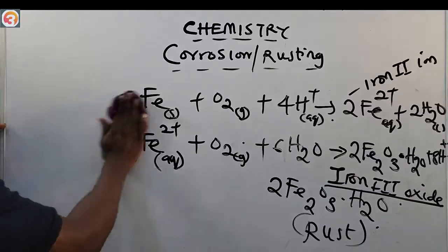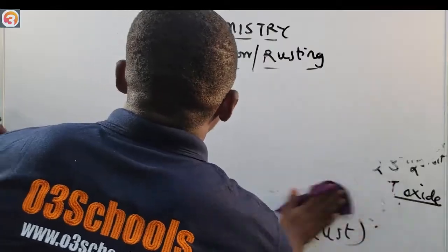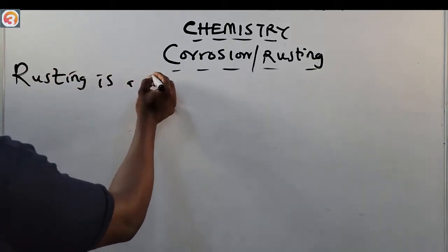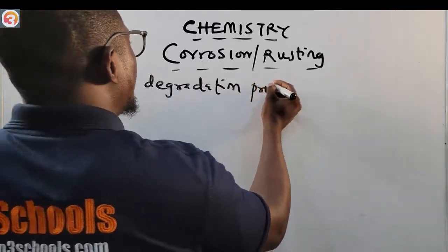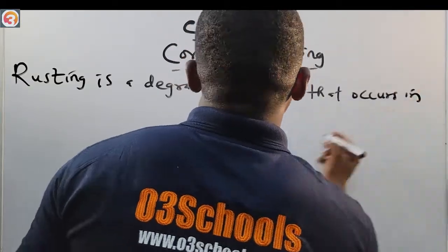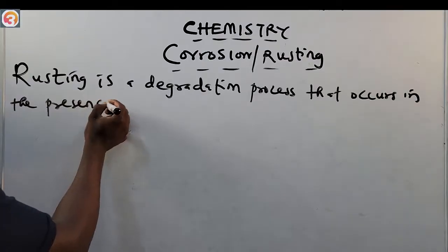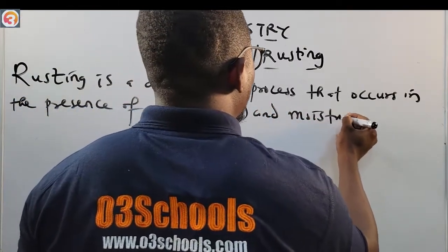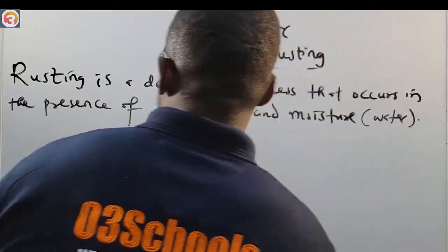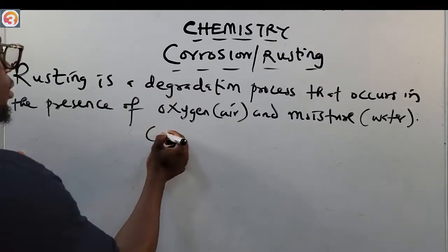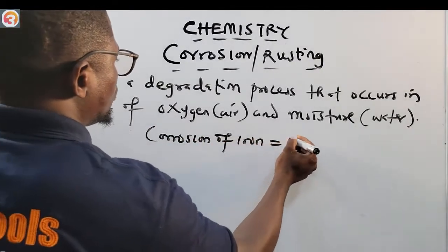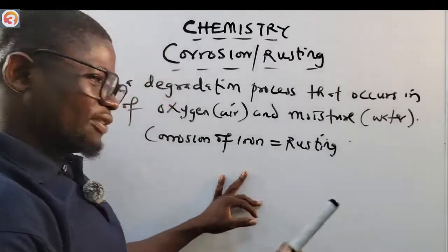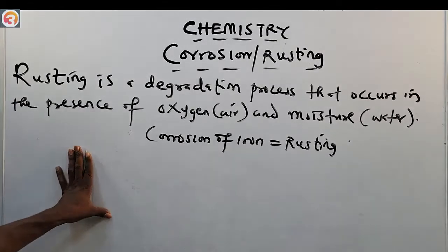When iron rusts, it combines with water and oxygen to form the hydrated form of iron(III) oxide. We have seen that from the previous equation, and there is a past question on it. The corrosion of iron is called rusting — all metals will corrode, but rusting is the specific term used for iron.